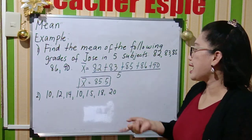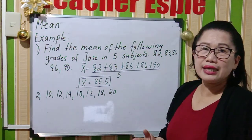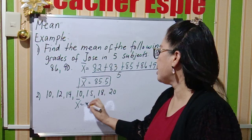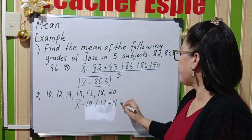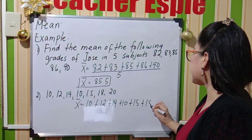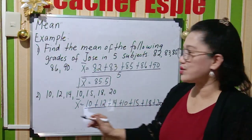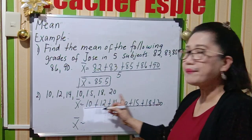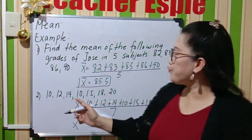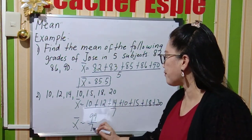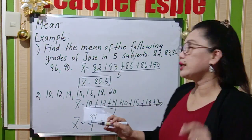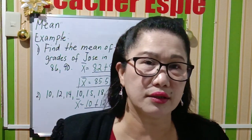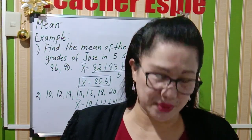Here is another example: 10, 12, 14, 10, 15, 18, and 20. How many values are there? 1, 2, 3, 4, 5, 6, 7 — so divided by 7. Get the sum of all the numbers and divide by 7. Adding all of them gives you 99 divided by 7, which equals 14.14. So this is the mean of the scores in example number 2.